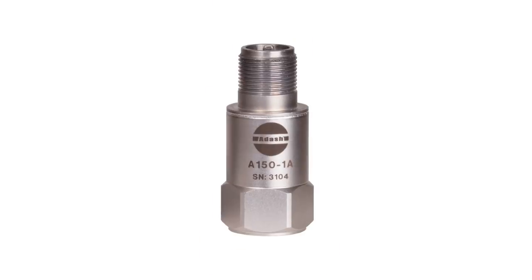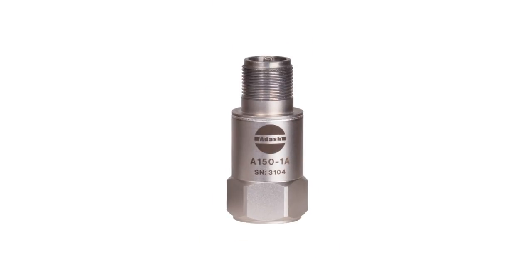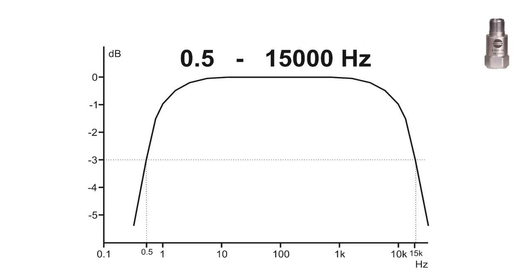This is a most common accelerometer with 100 mV per G sensitivity. The frequency range declared by producer is from 0.5 Hz to 15 kHz with plus/minus 3dB bias. Many people think that plus/minus 3dB is not too much.